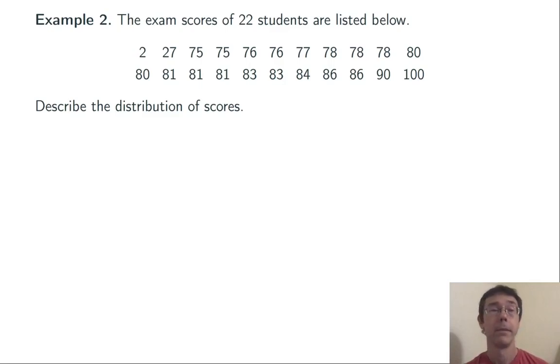Let's do another example. The exam scores of 22 students are listed below. Describe the distribution of scores. We're going to want to do a five-number summary and an IQR on this. But first, let's see why other measures of center and spread might not be the best here.